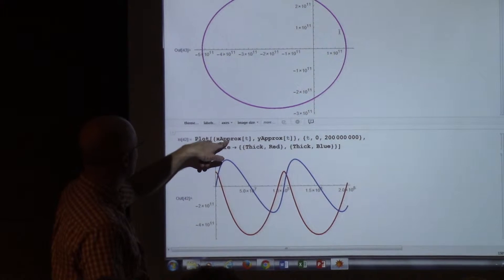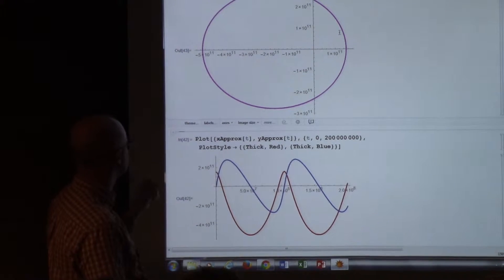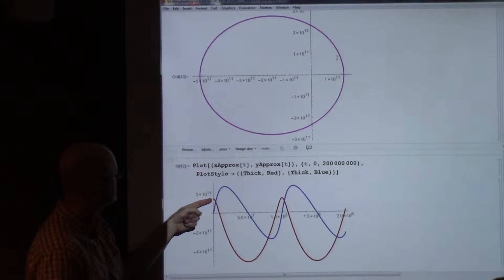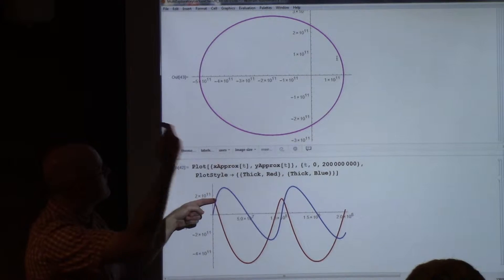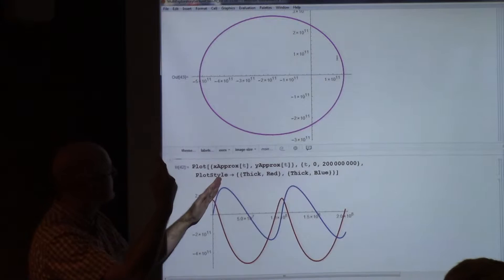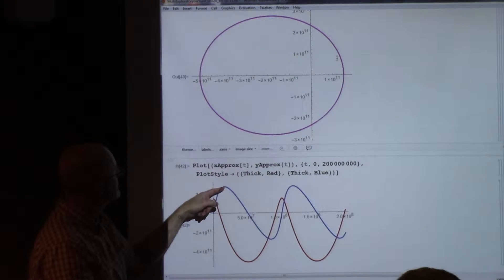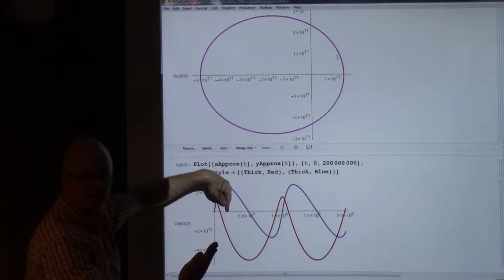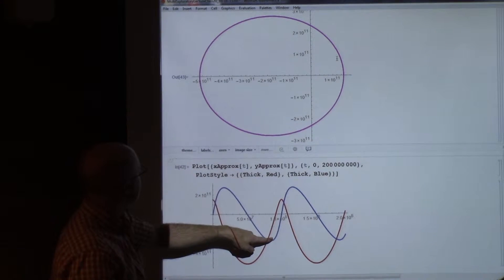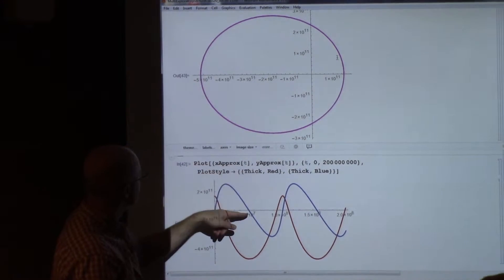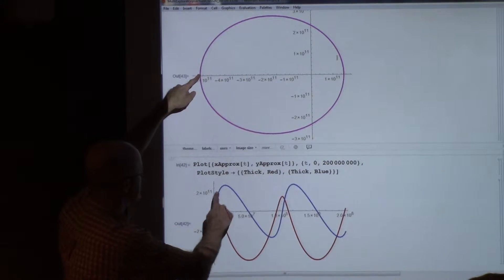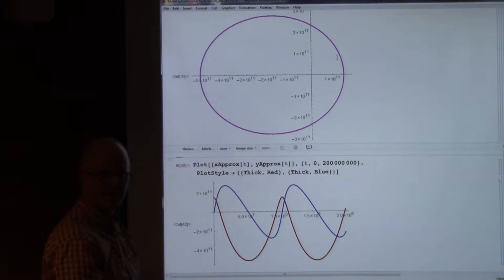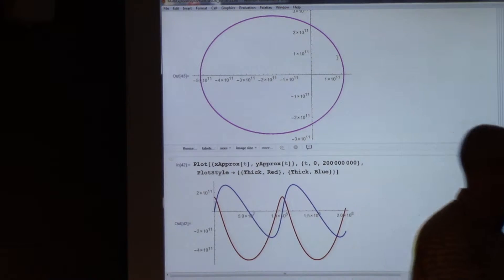We start over here. Red is the X coordinate. Blue is the Y coordinate. At this point, the Y coordinate starts out at 0. The X coordinate starts out at 1.5 times 10 to the 11th. The X goes down first because you're moving to the left. The Y goes up first because you're moving upward. When you reach the Y max there, that's going to be when you're at the peak. And that happens pretty quickly in time because the planet moves pretty quickly at first.